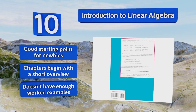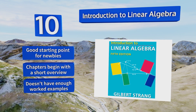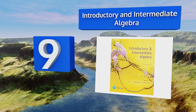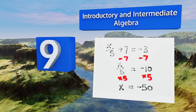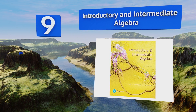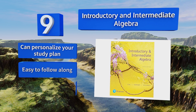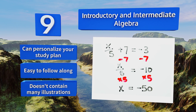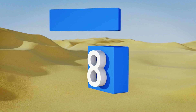However, it doesn't have enough worked examples. At number nine, Introductory and Intermediate Algebra gives a great overview of the basics and then goes more in depth, making it good for a wide range of students, even those with limited starting knowledge. It's well organized with thorough explanations and examples. You can personalize your study plan and it's easy to follow along, but it doesn't contain many illustrations.